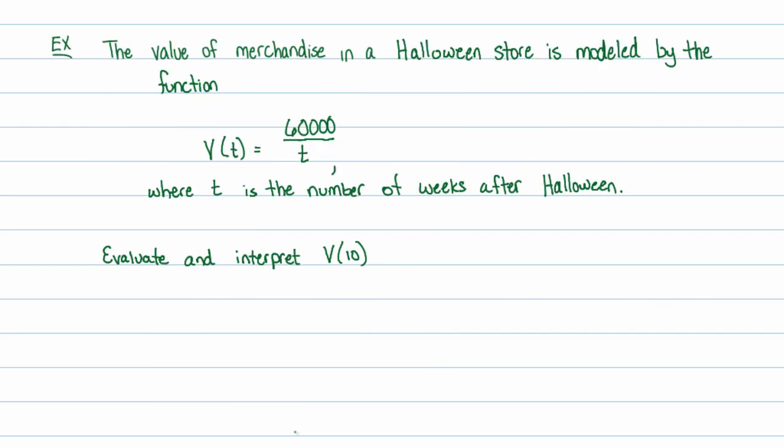And if anybody walks in, if they know what C stands for, especially if you use the word cost, they say, oh, I see you're talking about a cost of something. You plugged in 24,000, you got out 3,600. 24,000 miles driven leads to a cost of $3,600 per year. As another application, let's just take a look at this. The market value of merchandise in a Halloween store is modeled by the function V of T is equal to 60,000 divided by T, where T is the number of weeks after Halloween. Evaluate and interpret V of 10. So, first part is just evaluate V of 10, which means that we take that function here and wherever we see T, we're going to replace it with 10. We get this, which is 6,000.